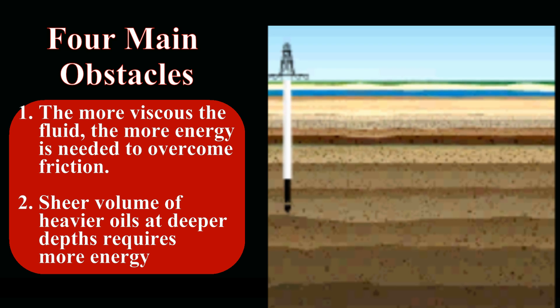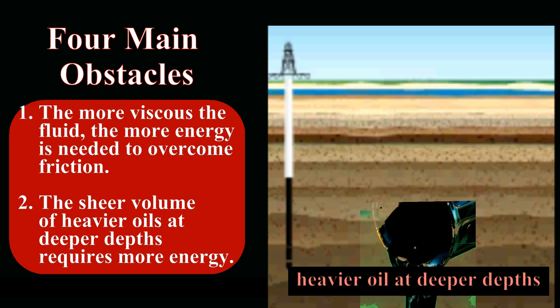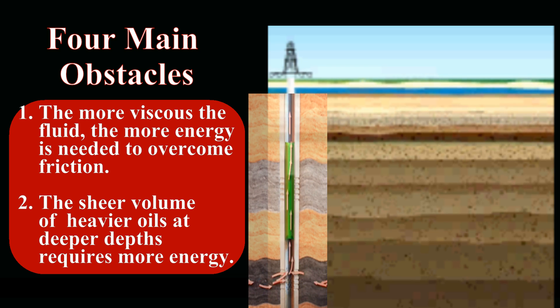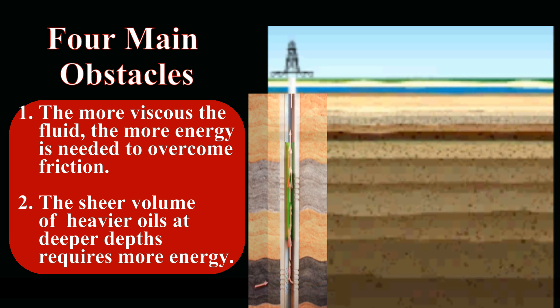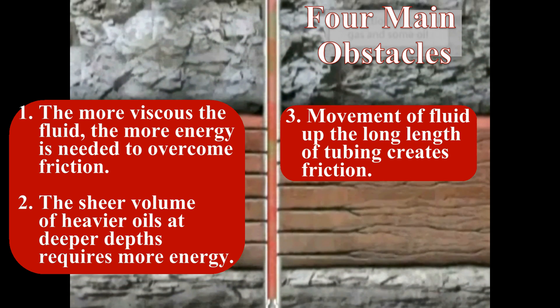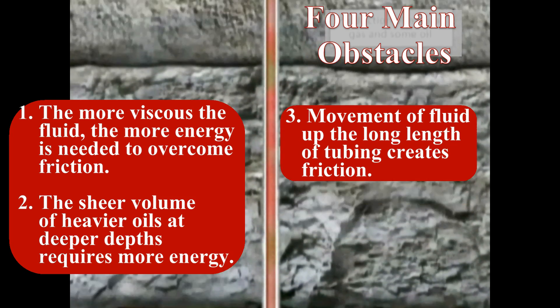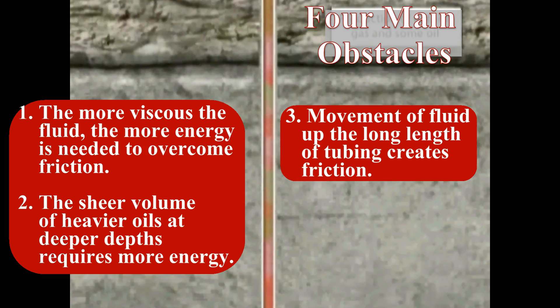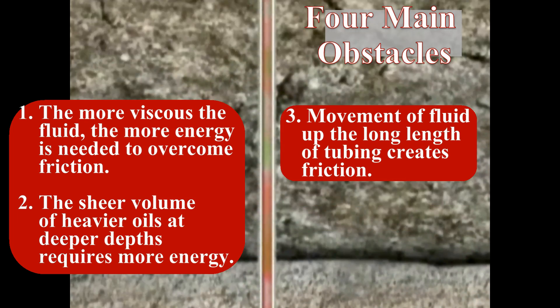The second obstacle comes about in fields with denser oils and deeper depths. The sheer volume of those heavier oils inside deep wells means that more energy is needed from the reservoir to lift that added weight to the surface. The third obstacle is specific to very deep wells with high flow rates. In these wells, just the movement of fluid traveling up the long length of tubing and rubbing against the inside tubing wall creates significant friction. As the frictional force slows the oil's upward movement, more energy is needed to ensure the flow of these fluids.